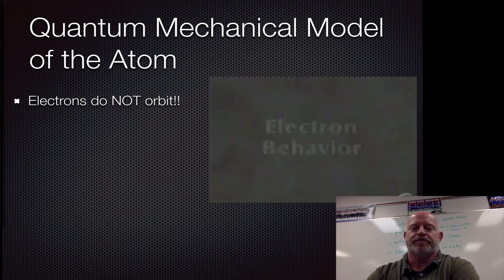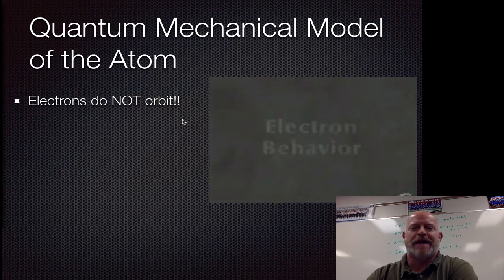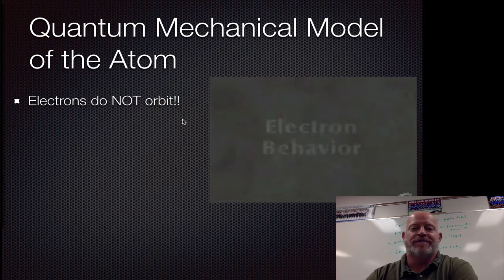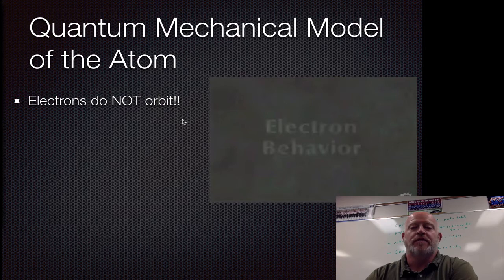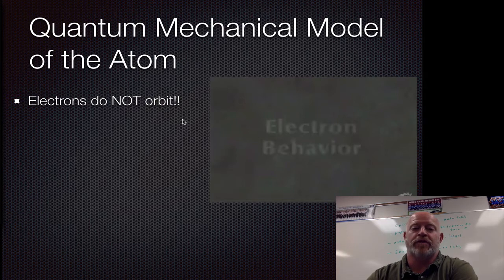Number one, most important thing: electrons do NOT orbit. The idea of electrons following this exact same pathway three-dimensionally around the atom is not correct. It was an oversimplified idea that we had in the early 1900s, but we now know that we do not know the location of the electrons and they do not follow a nice pattern orbit.